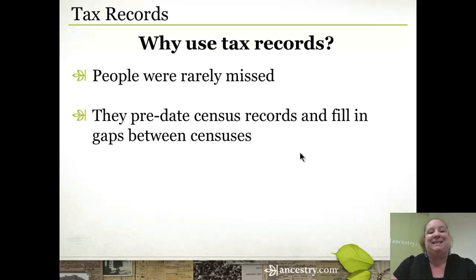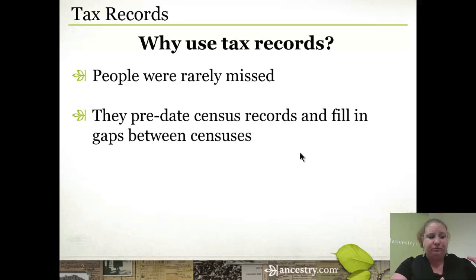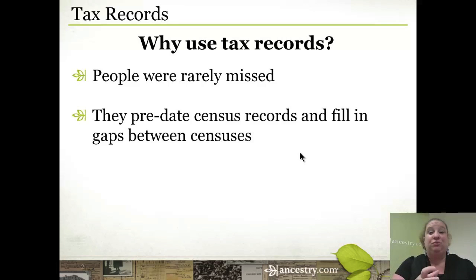Tax records also pre-date census records and fill in the gaps between the census. Here in the United States the federal census is only taken every 10 years. We began taking the census in 1790, and we've taken it all the way through to the current day. However, there's a 72-year privacy law, so the latest available census is 1940 — from 1790 through 1940, with the exception of the 1890 census which was destroyed in a fire. A 10-year gap is a long time, and so tax records help fill in that gap.